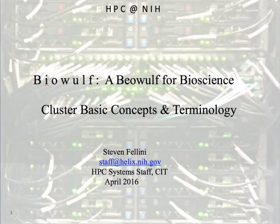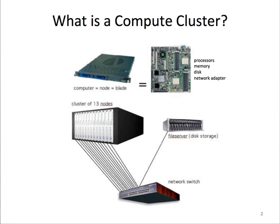In this session we're going to review some basic concepts and terminology which are important to understand in order to effectively use the BiWolf cluster. Let's start with what is a compute cluster. The basic component of a cluster is a computer, probably very similar to what you have on your desktop. We call these computers compute nodes. Each node has processors, memory, a disk drive, and a network adapter. And if we then connect a number of nodes to a network switch with perhaps some network accessible storage, we have a compute cluster.